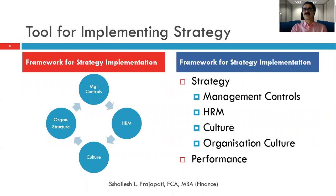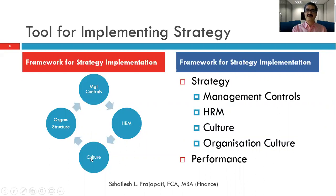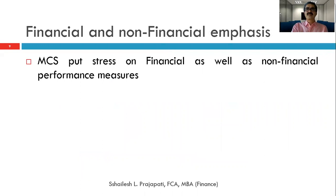There are tools to implement strategy: management control, then human resource management, which must cultivate the culture of people as organizational culture. Based on that we arrive at performance. So the sequence is: management control, then HRM, then culture, then organizational structure.